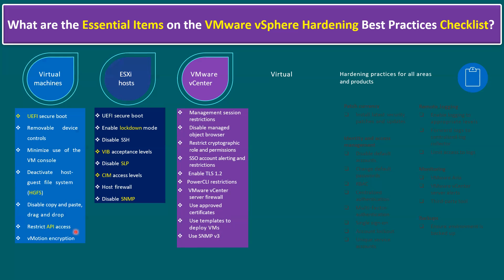And restrict API access — Application Program Interface access — and vMotion encryption. Even at the virtual machine level, it is recommended to enable encryption. I'm not including all the items on the hardening list — only the most essential items are highlighted here. For more details, you can search for 'VMware vSphere hardening' on Google. You will find the official VMware hardening guide. You can follow that and apply it in your production environment.